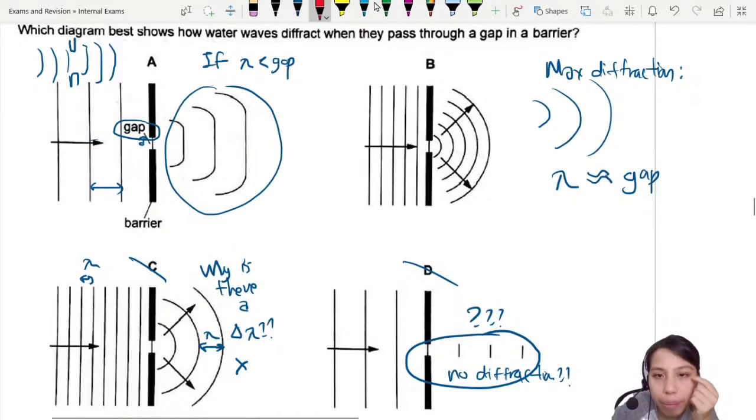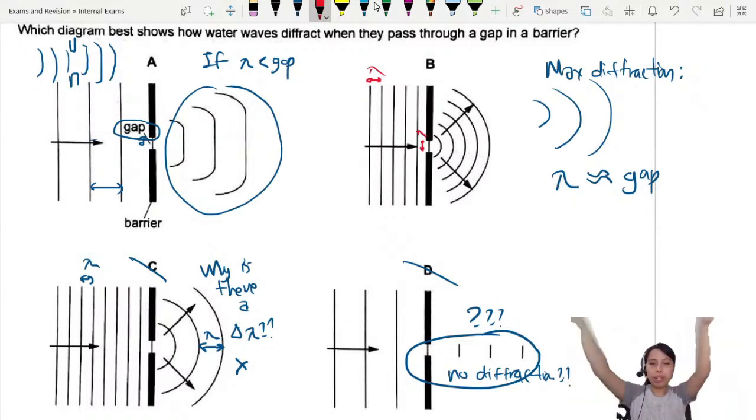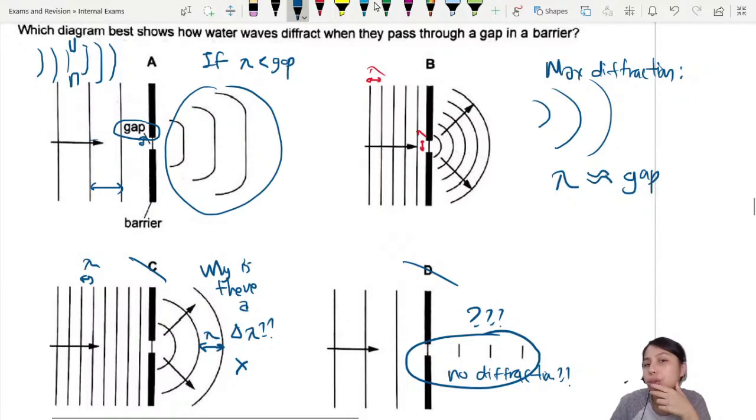So if you look closely at B, wavelength is roughly this distance. The gap also about the same distance. Oh, maximum diffraction all spread out. Very nice. So A and B are close fight. But B would be the better choice in this case. So remember, what does maximum diffraction mean? Very nice shape.